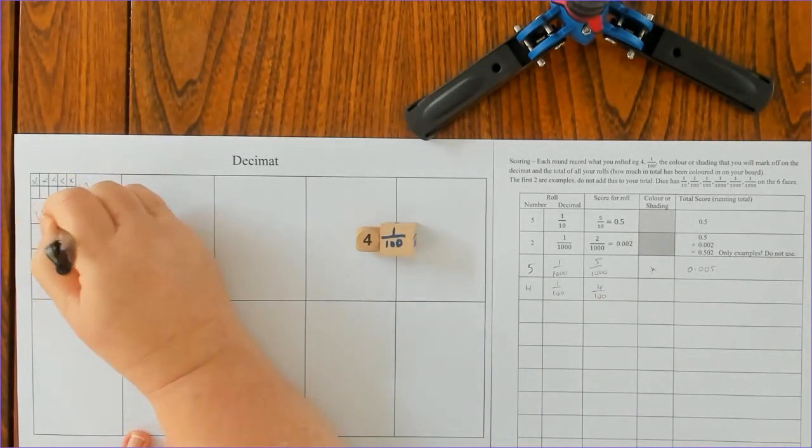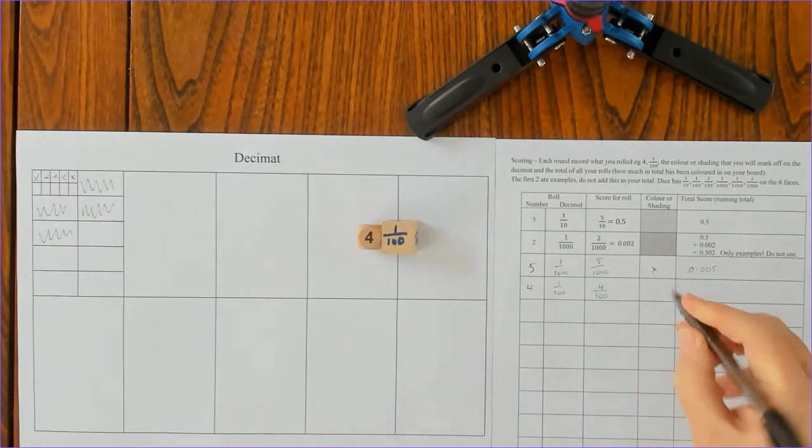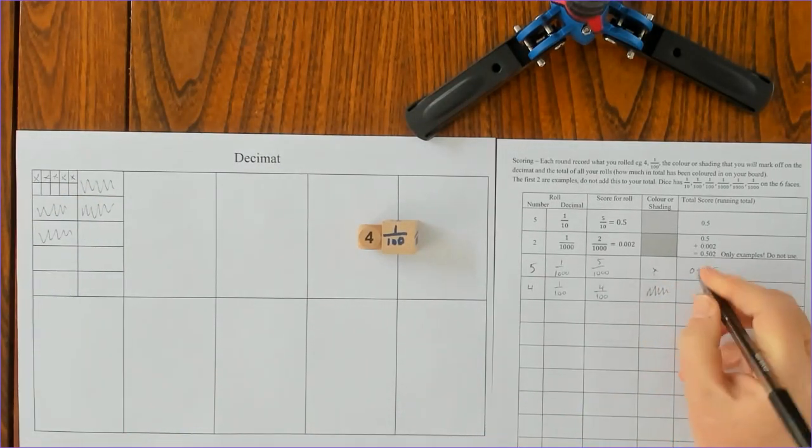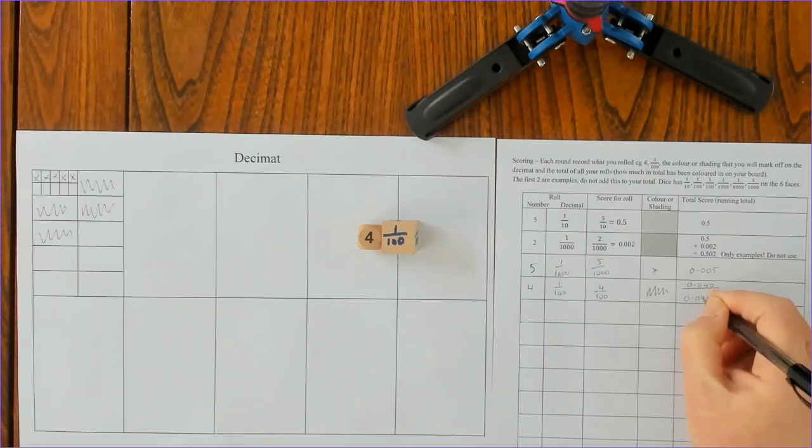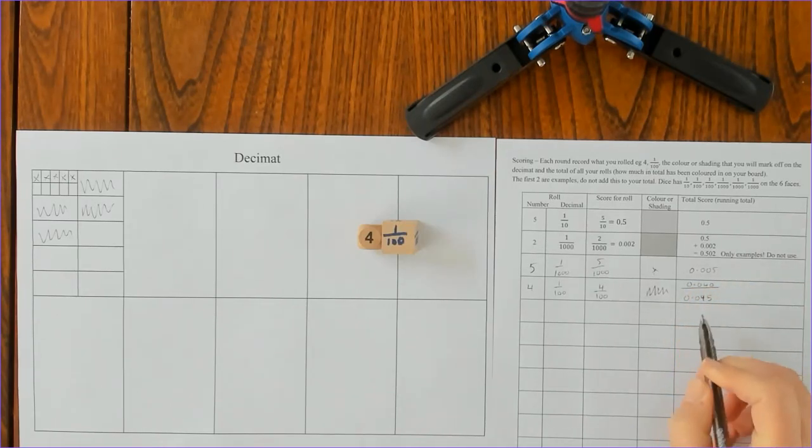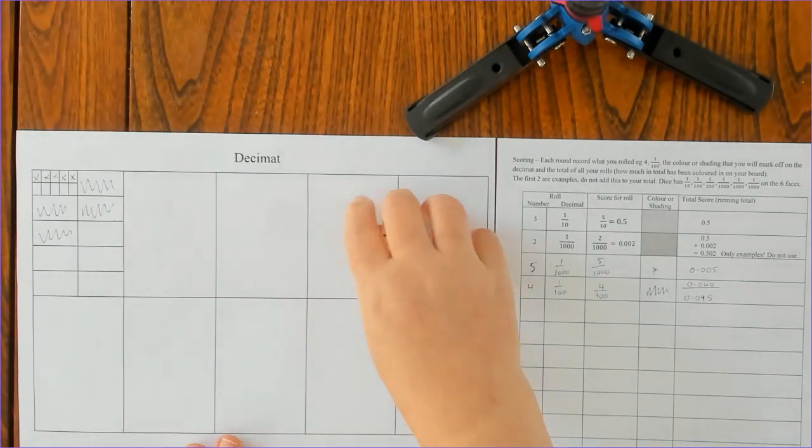Now I've got to add in my four hundredths and that will give me four hundredths and five thousandths, or forty-five thousandths. So at each stage you can actually check the score as well, so it's a nice game for that too.